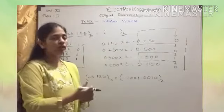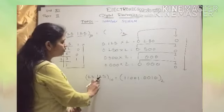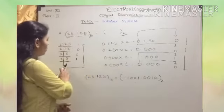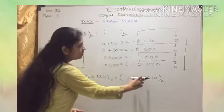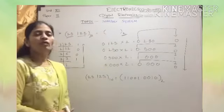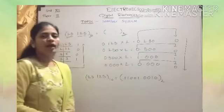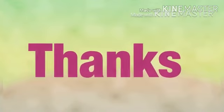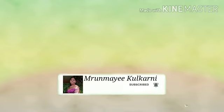Now we join the integer part and the fractional part. The decimal number 25.125 is converted into binary. The final answer is 11001.0010.